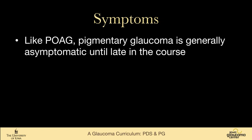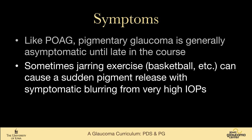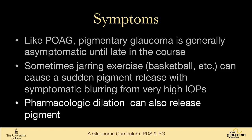Like primary open-angle glaucoma, pigmentary glaucoma is generally asymptomatic until late in the disease course, when visual field loss and other symptoms of advanced glaucoma appear. However, because these patients are young and often active, very jarring exercise — like basketball, volleyball, or racquetball — can cause a sudden pigment release with symptomatic blurring from very high intraocular pressures. Pharmacologic dilation can also release pigment and cause pressure to rise.